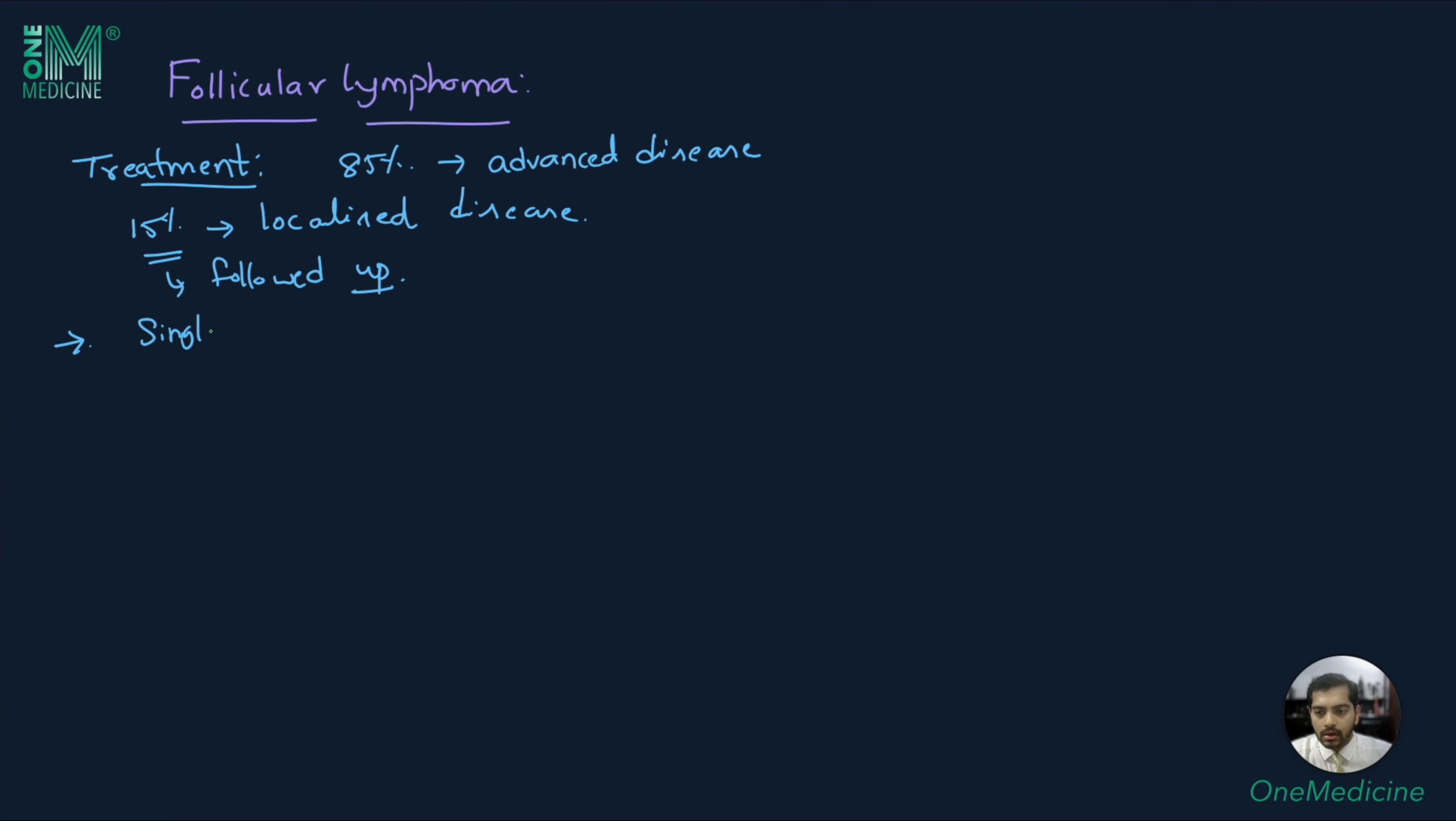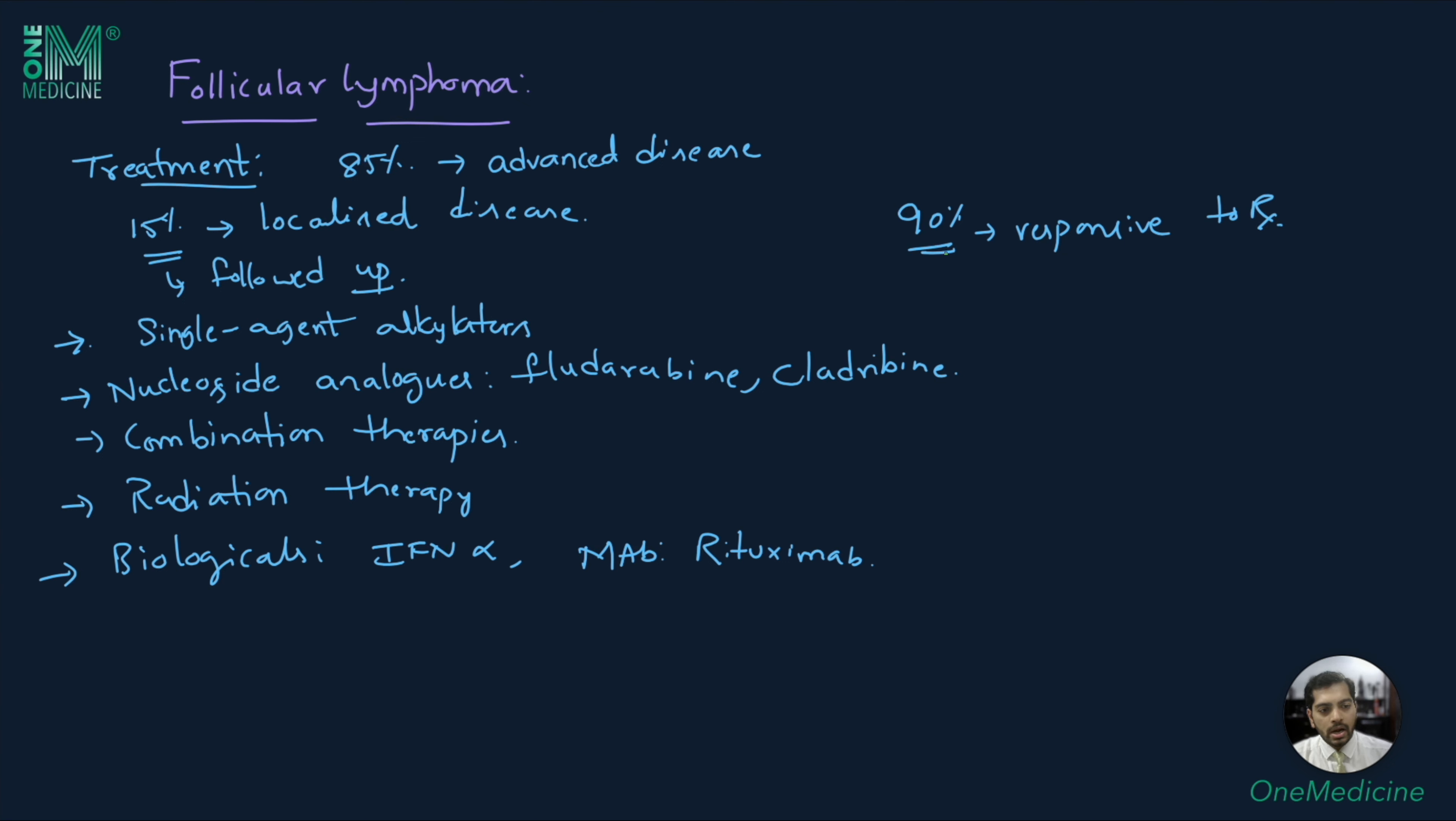Other therapies include single-agent alkylators, nucleoside analogs including fludarabine and cladribine, combination therapies, radiation therapy, and biologic agents including interferon alpha and monoclonal antibodies such as rituximab. The good thing is more than 90% of the patients are responsive to therapy, and about 50-75% of the patients show complete response.